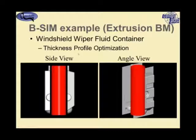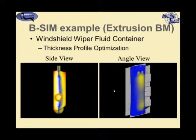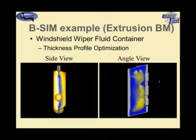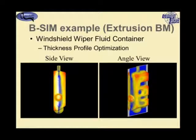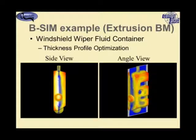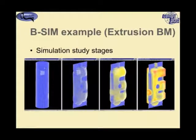Here is another example for extrusion blow molding: a windshield wiper fluid container, which is quite often given the least amount of thought in the automotive process, yet has a very complex shape. With an even starting parison thickness, we have a very large thickness variation throughout the final part — primarily in these corners, which become very thin and fragile. This detail cavity is also getting quite thin because material has to blow into that region, while other walls remain relatively thick.